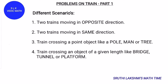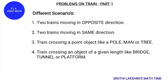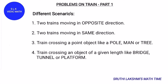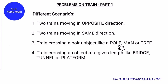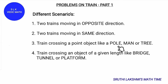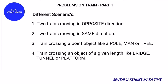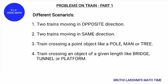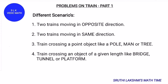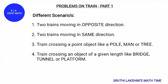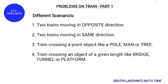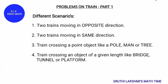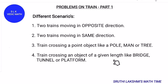The first type is when two trains are moving in the same or opposite directions. When a train is crossing a point object like a pole, man, or tree, these are considered point objects. When a train is crossing an object like a bridge, tunnel, or platform, these are considered given-length objects, because the problem will provide the length of the bridge, tunnel, or platform.